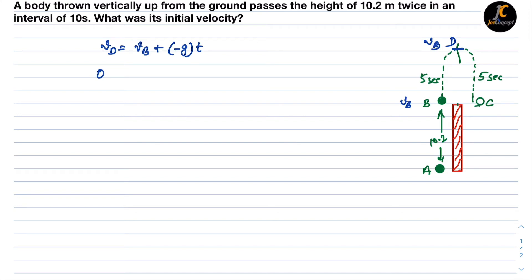So vD is obviously 0 at point D, the velocity will be 0, and vB we will find out, and minus g is 10, and t is 5 seconds. So for this 5 seconds we can calculate the value of vB, so vB is going to be 50 meters per second. That means the velocity is 50 meters per second.